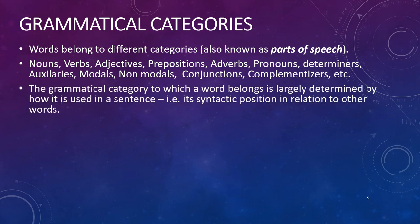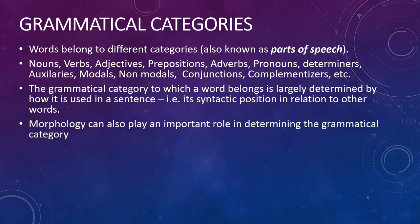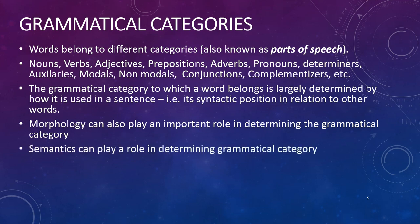When we try to identify these categories, there are three main systems we can use. First, we could look at the syntactic relationship to other words — the grammatical category to which a word belongs is largely determined by how it is used in a sentence, i.e., its syntactic position in relation to other words. Second, we could use morphological methods, as morphology can also play an important role. Third, we can use semantics or meaning to determine category membership.